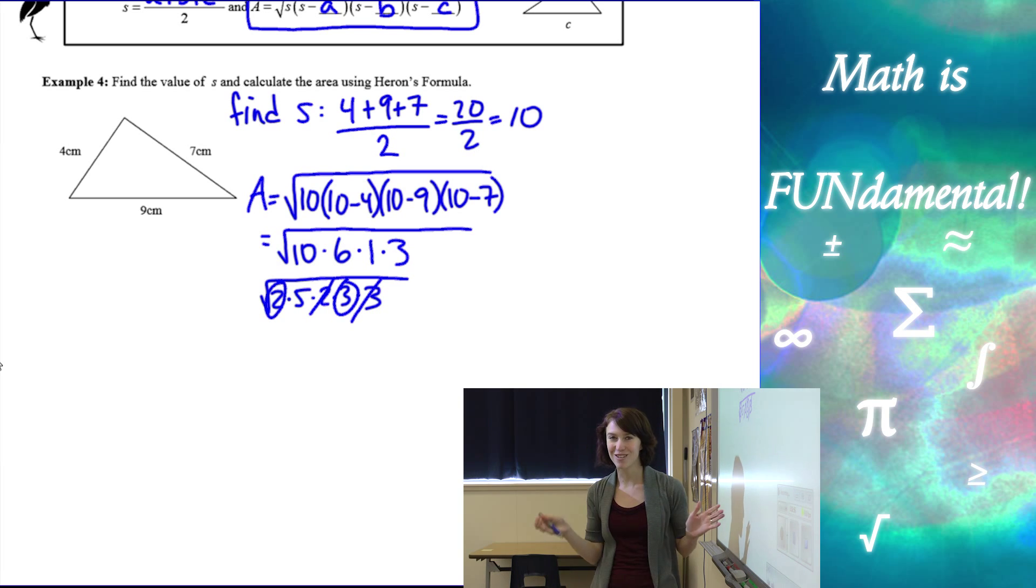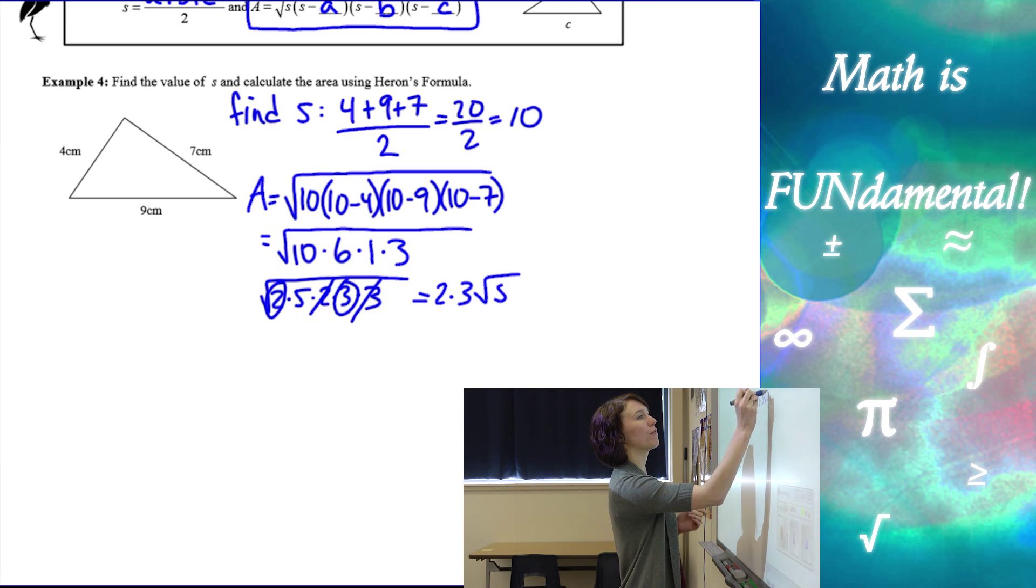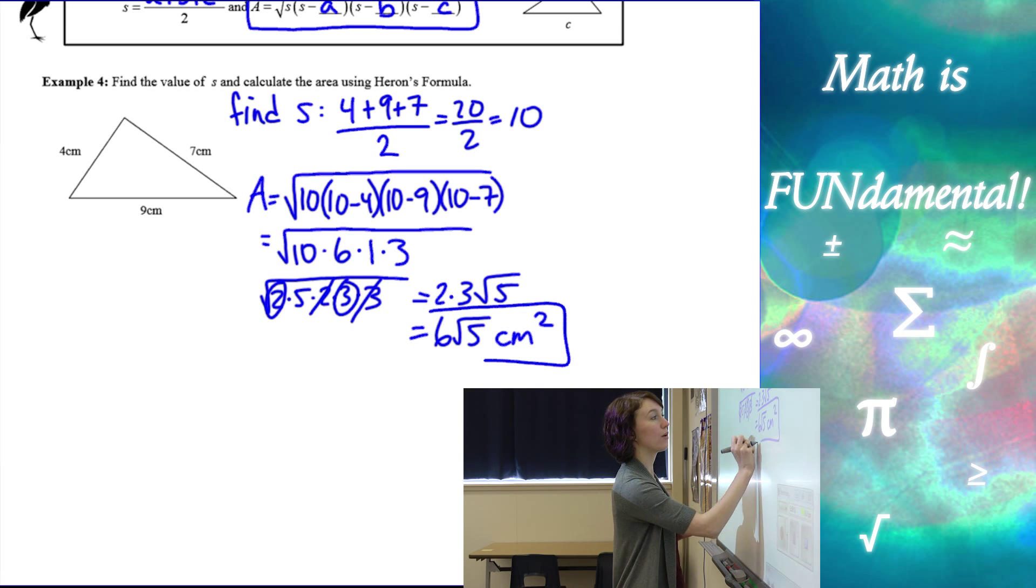And if you're not sure what I'm doing and you have your own method of simplifying square roots, that's just fine. So here I have two times three and then the square root of five on the inside or six root five. And then I look for my units, which were centimeters. I'm finding area. So I always want to square those units.